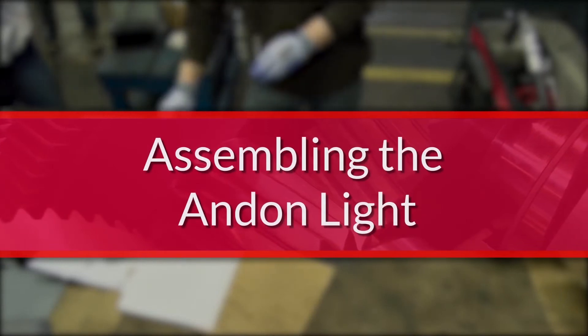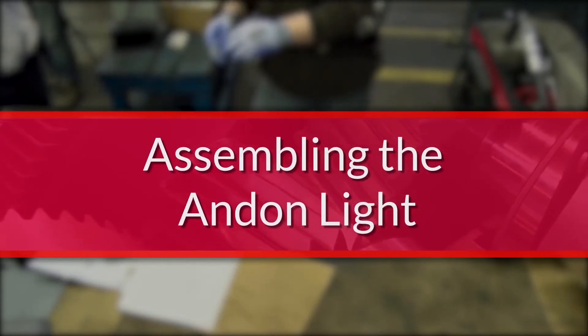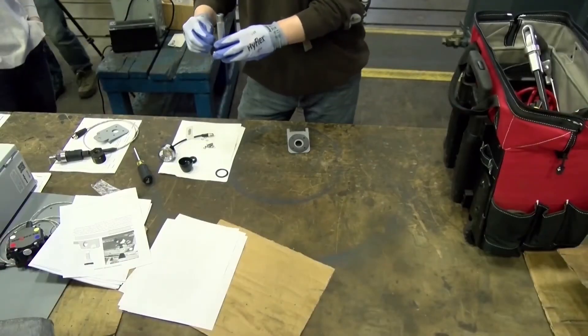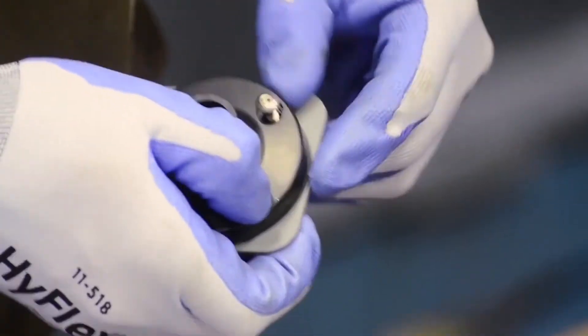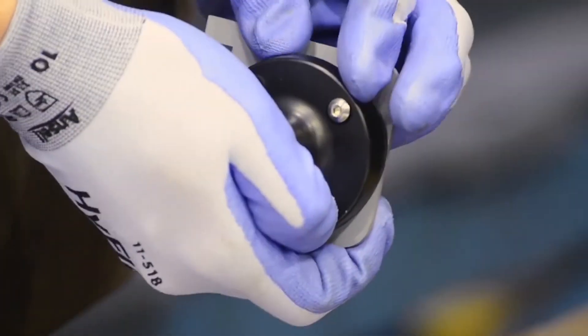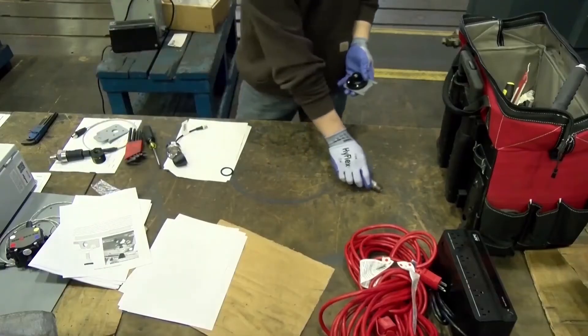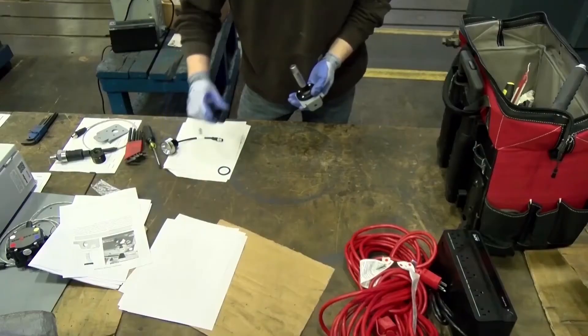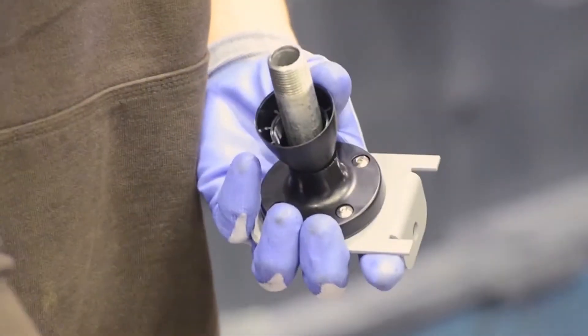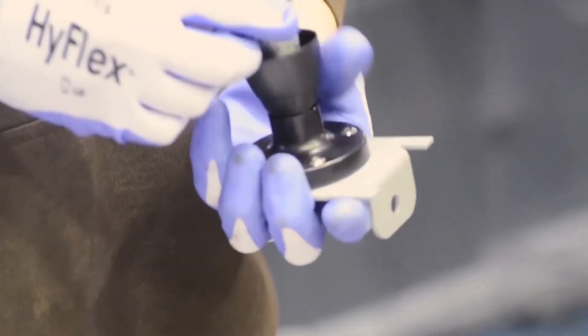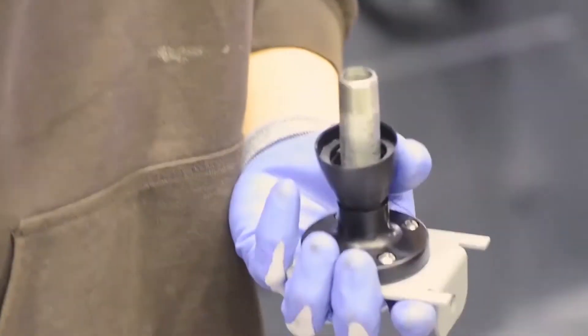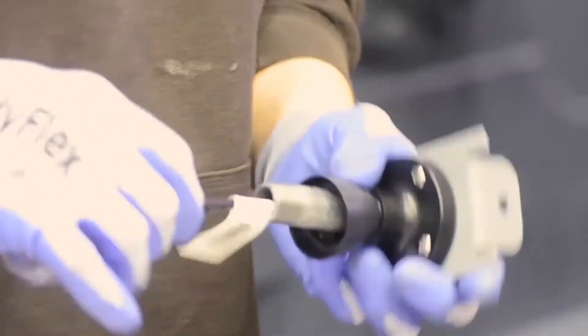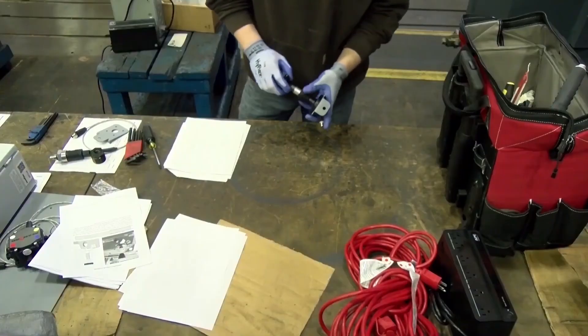Take the components of the andon light and begin to assemble them. Take the screws and fit them into the holes of the circular base. Take the mounting bracket and using the washers and nuts, assemble them together. Insert the rubber grommet in the center of the circular base. Screw the metal conduit onto the mounting bracket. Slide the conduit adapter onto the conduit. Take the andon light and feed the cable through the piping until the cables emerge on the other side. Screw the light tight.